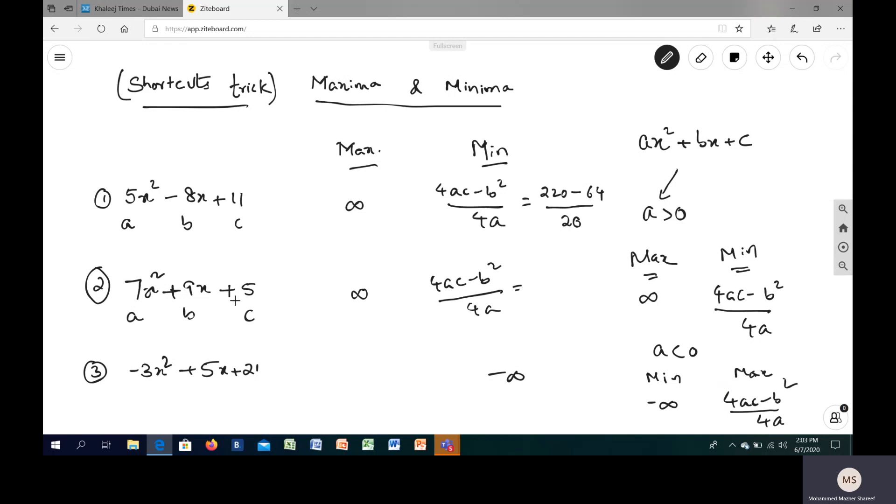4 times 7 into 5, or you can say 4 into 5 is 20, 20 into 7 is 140. 140 minus 81 divided by 4 times 7, that is 28.